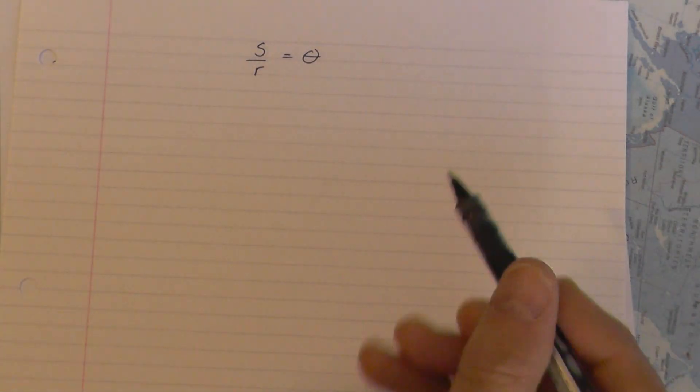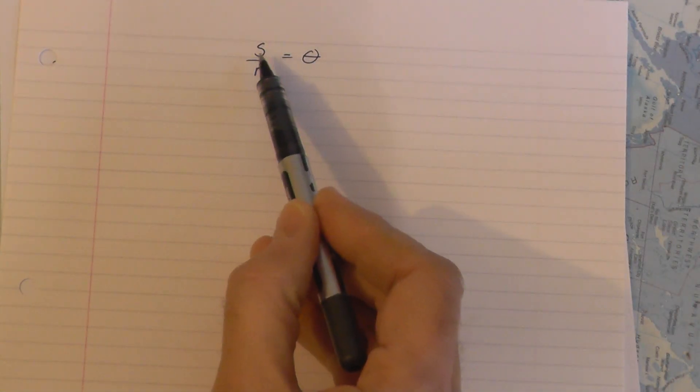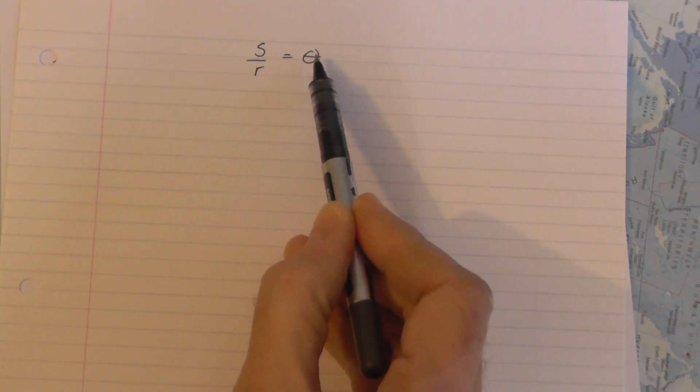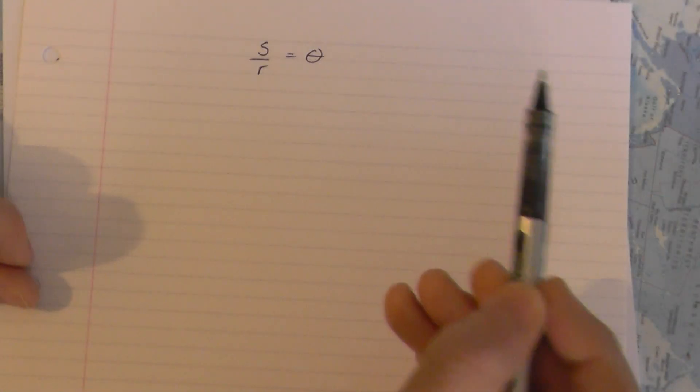OK, in this video let's have a closer look at this relationship of S compared to R which gives an angle in radians of theta.